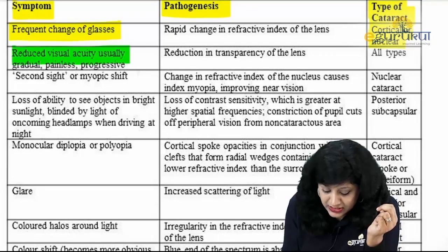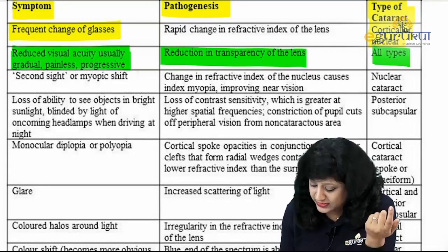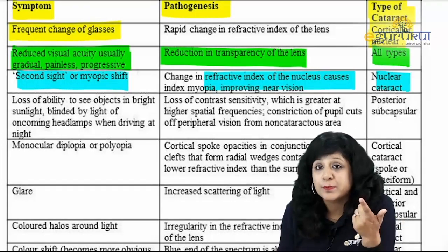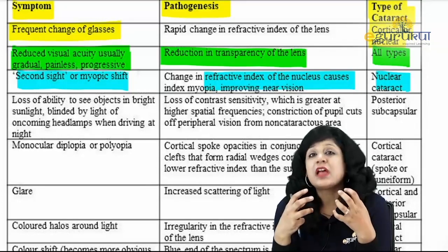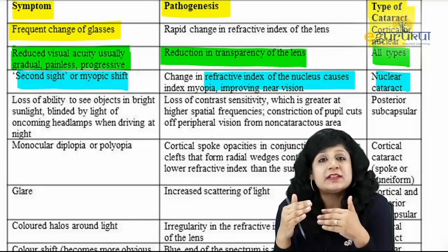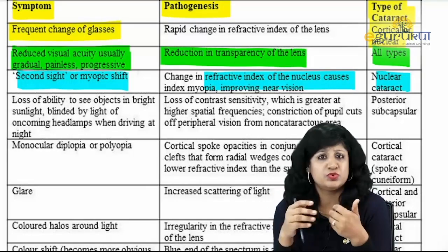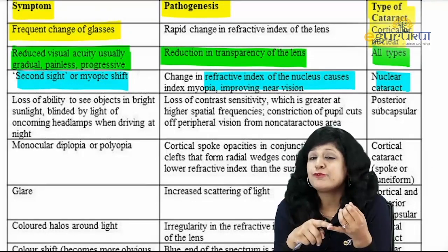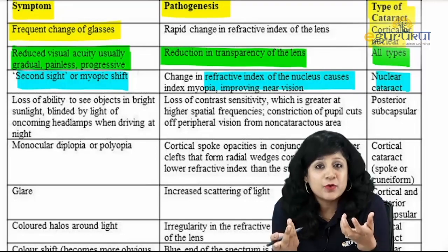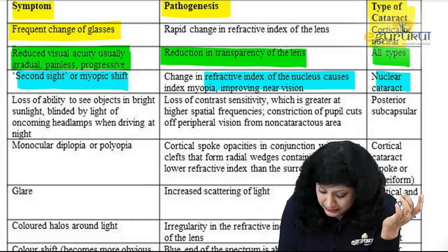Reduced visual acuity is gradual, painless and progressive due to reduction in transparency — occurring in all types. Second sight occurs in nuclear cataract because of progressive index myopia. The nucleus hardens, compensating with increased converging power, rays are focused anterior to the retina, leading to development of myopia. Because it is due to the refractive index, it is called progressive index myopia.